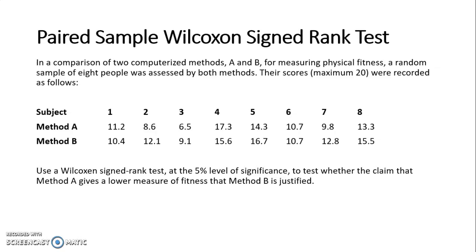A couple of things to point out in this question. It specifies that the scores had a maximum of 20. The reason for that is so that we can make the assumption that the data is symmetrical around the population median. Remember, to use a Wilcoxon we have to make that assumption. If we don't know what the maximum score was, we don't know if we can have a symmetrical data set.